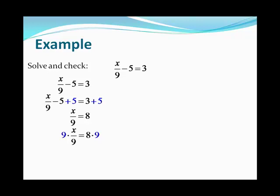The 9s cancel on the left-hand side, leaving us with just x. And 8 × 9 = 72. Our potential solution is 72. We put that back in for x into the original equation and work this out to see that we get a true statement. So our solution, x = 72, was correct.